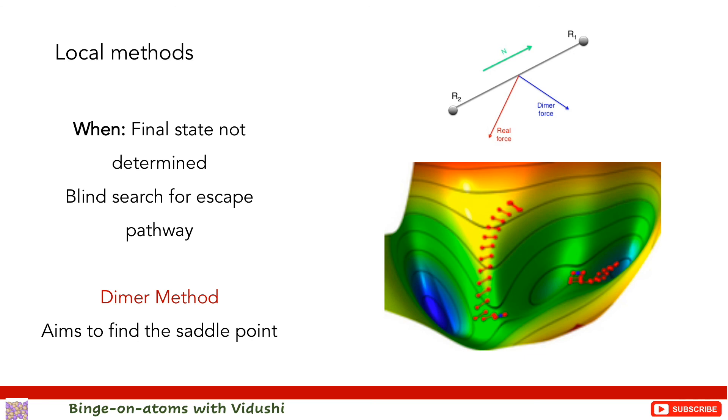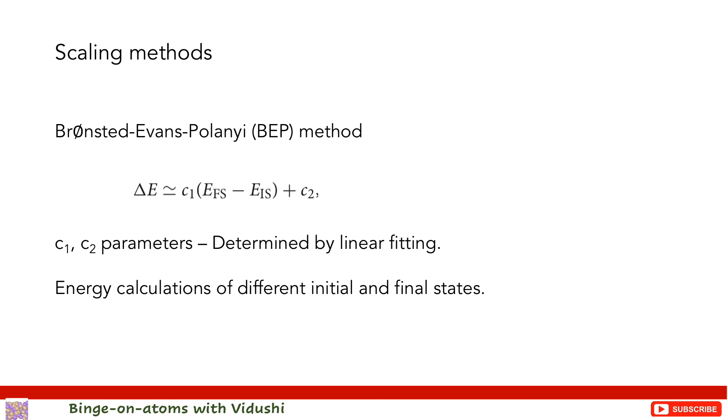Now all these methods can be computationally expensive, and scaling methods offer a cheaper alternative to find energy barriers. The BEP relation shown here is a prominent approach in scaling methods, which results in a linear relationship. Here E_fs and E_is are total energies of final and initial states, and c1 and c2 are constants. By optimizing different nearby geometries, c1 and c2 can be obtained by linear fitting.